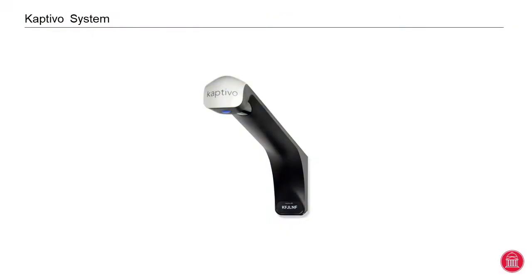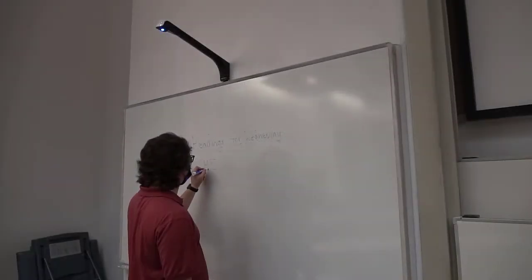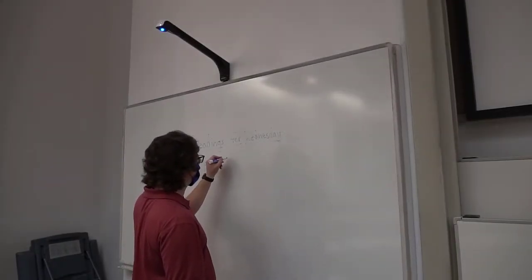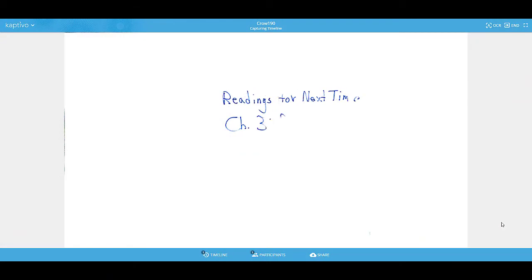Around 50 classrooms on campus now have a device called Captivo. This is a camera that is mounted on top of a whiteboard. Remote participants can join via a web browser to view the content on the board. The instructor can use regular dry erase markers and write and erase normally. The camera captures only the writing and shares that via the browser. Similar to the Epson projector, it will retain slides of all whiteboard content during the shared session, which can then be emailed and saved.